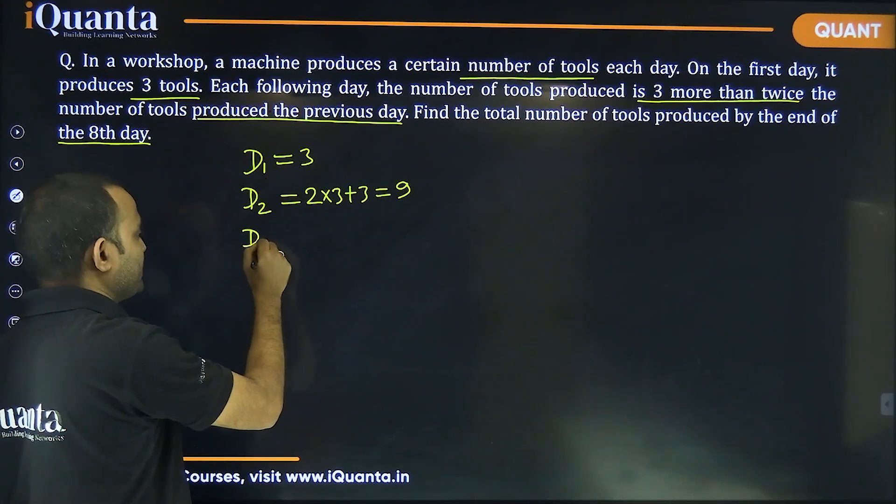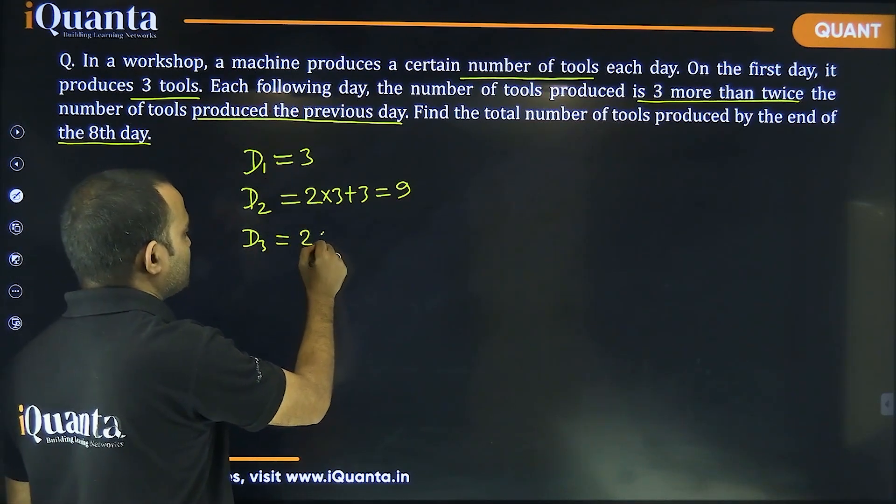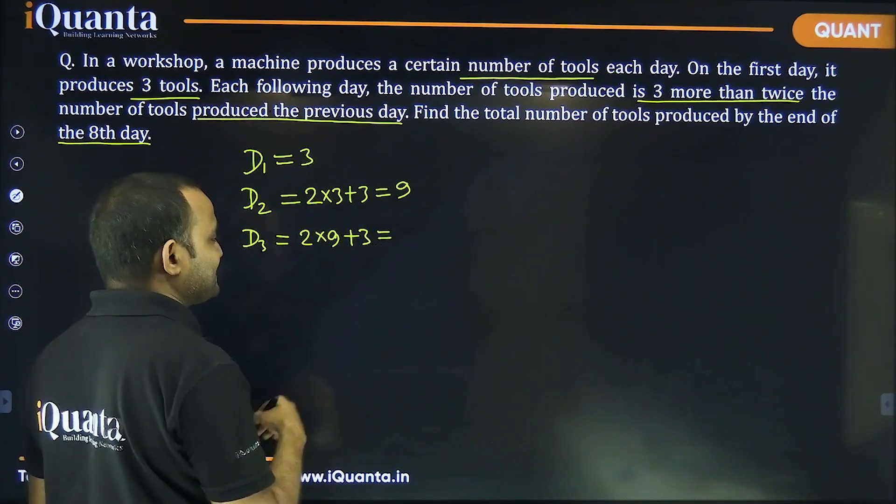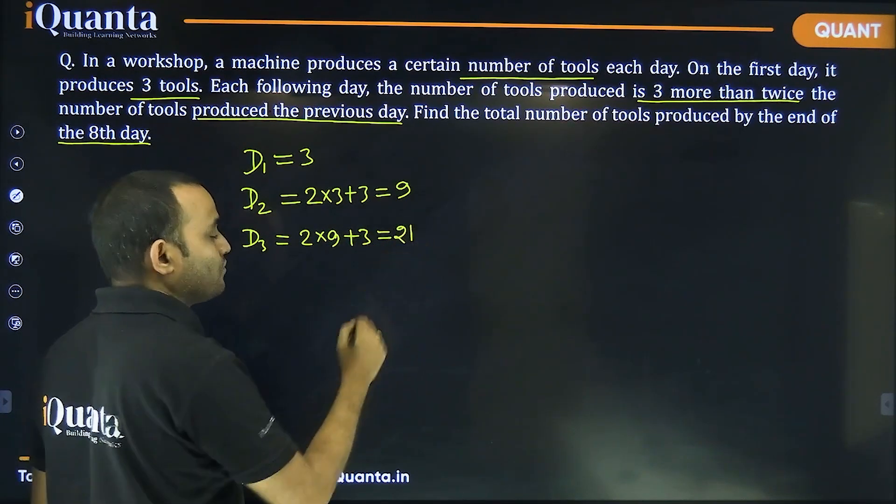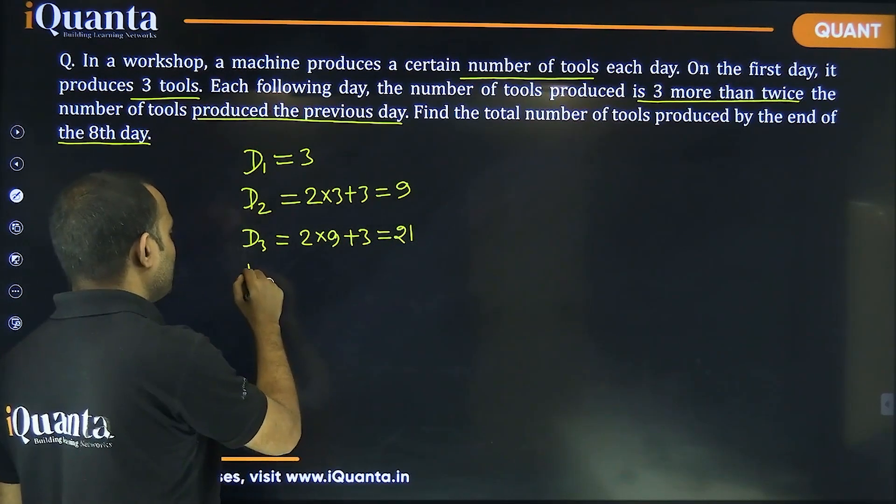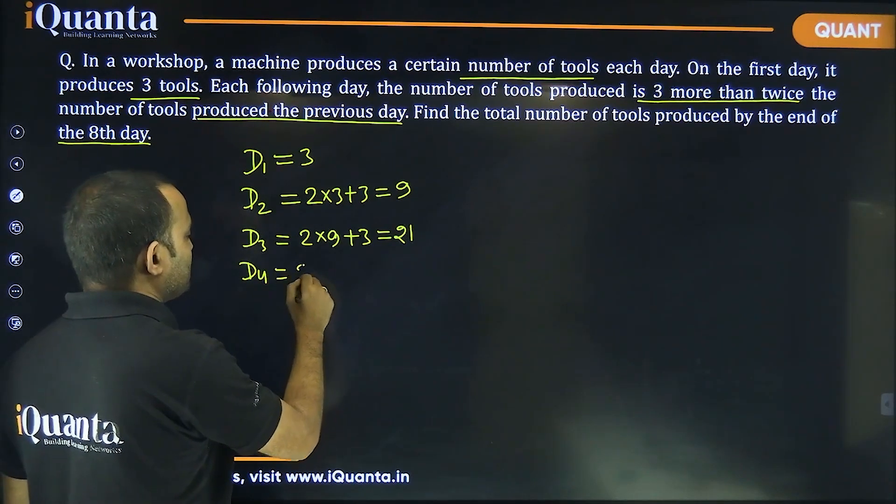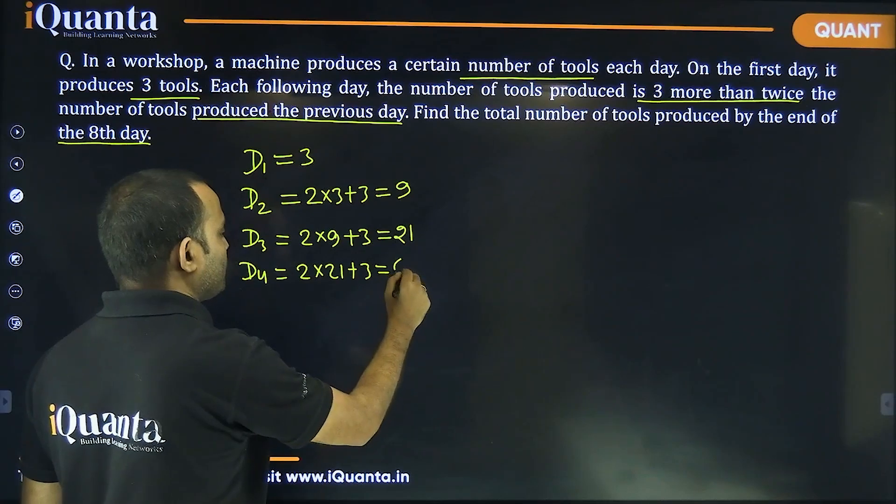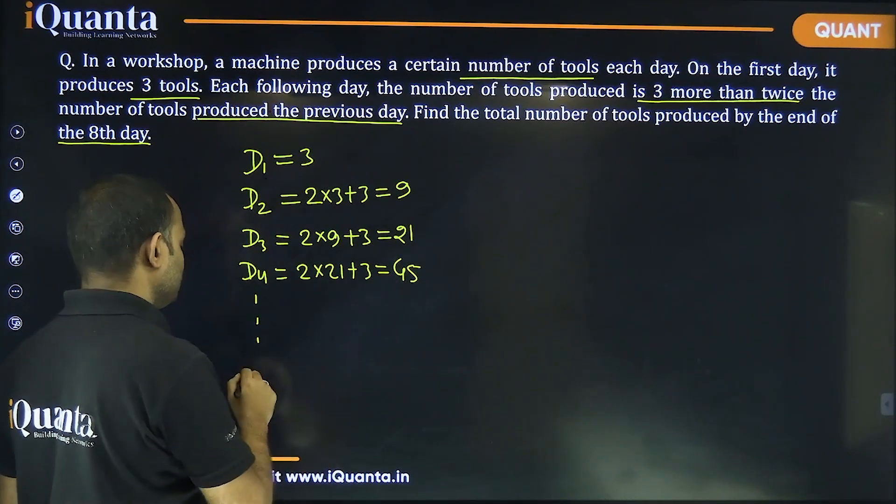Then day three, number of tools produced will be two into nine plus three, and that is equal to twenty one. Then again, on day four, it will be two into twenty one plus three, which will be equal to forty five, and this will go on.